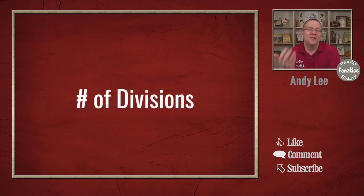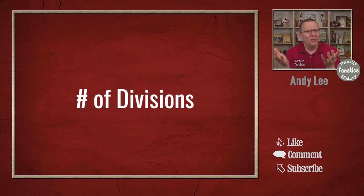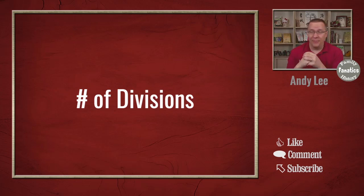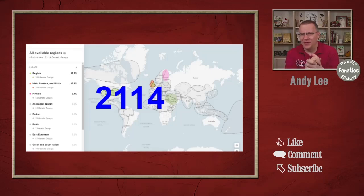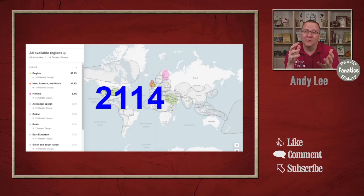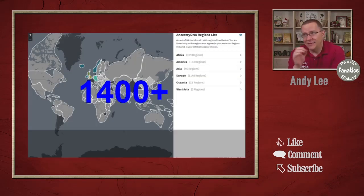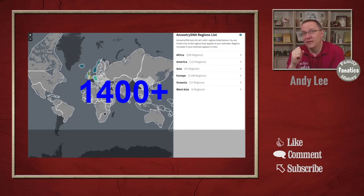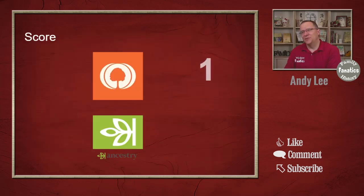First off, the number of divisions. If you took all of your DNA sample as just one group, it's not going to be very helpful for dividing things out. MyHeritage has taken their database of about 5 million people and divided it into 2,114 different genetic groups. Ancestry has 1,400-plus genetic communities, so it's about 50% less than MyHeritage. Because of that, I'm going to give the win for this category to MyHeritage.